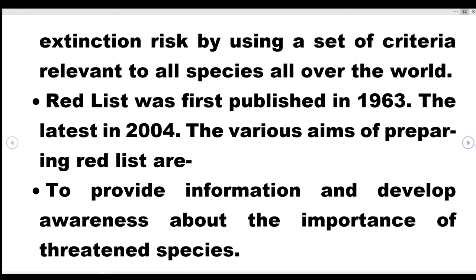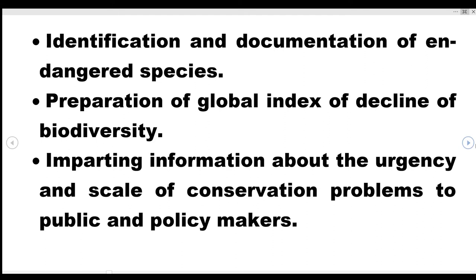The Red List is a catalog of species and subspecies facing various degrees of extinction risk, by using a set of criteria relevant to all species all over the world. The first Red List was published in 1963, and the latest was published in 2004. The aims of preparing the Red Data List are: to provide information and develop awareness about the importance of threatened species, identification and documentation of endangered species, and preparation of a global index of decline of biodiversity.